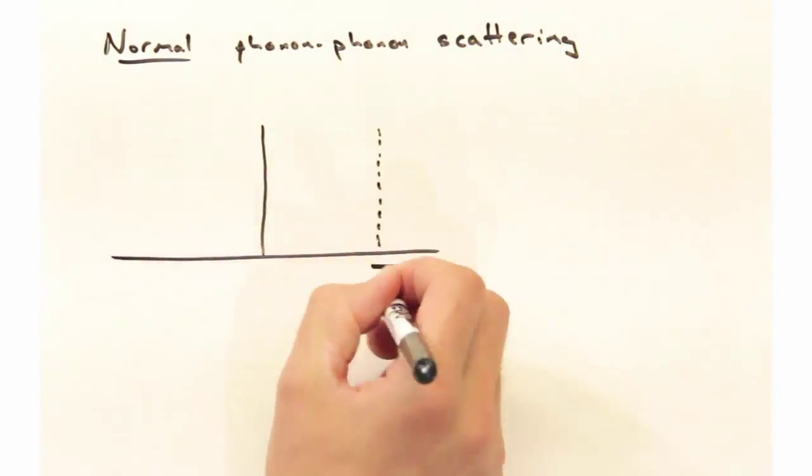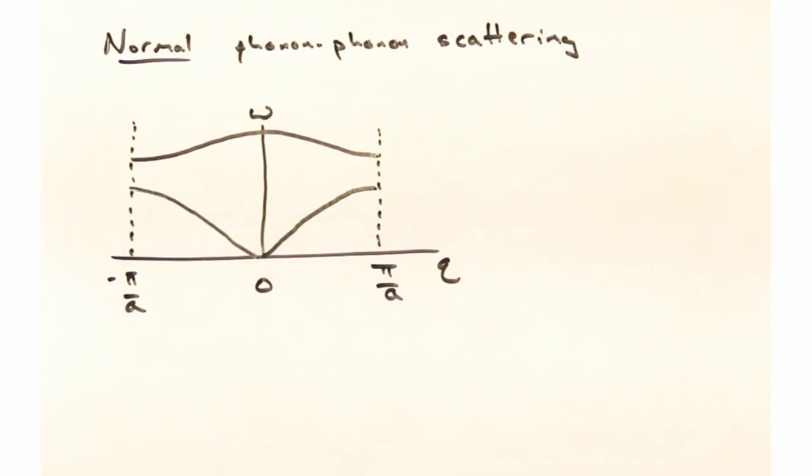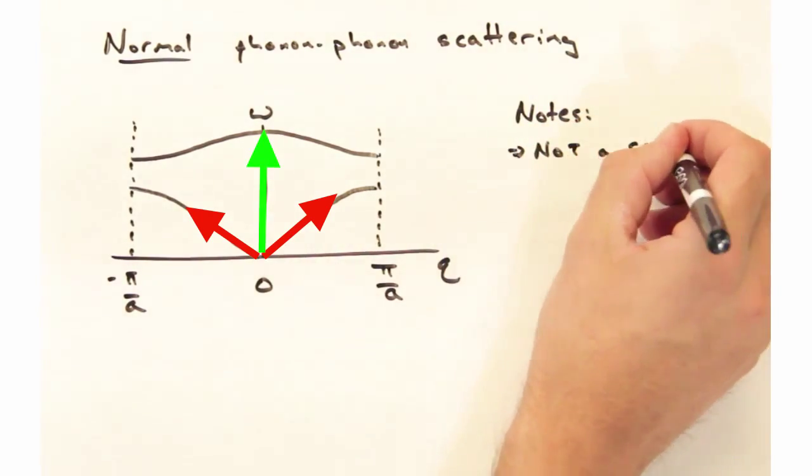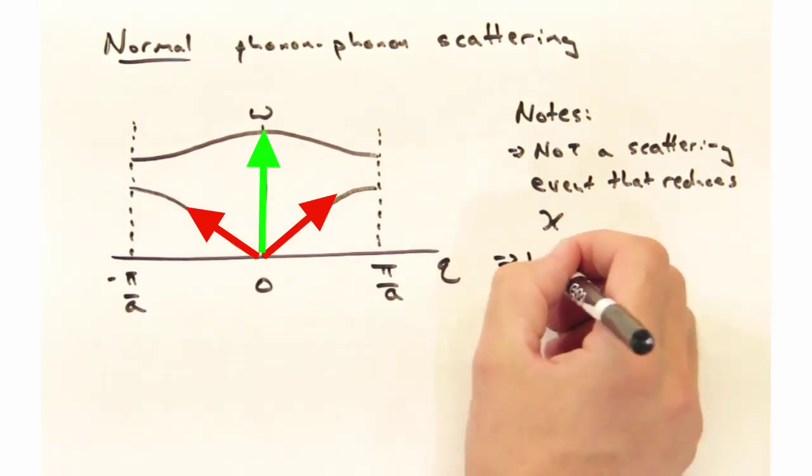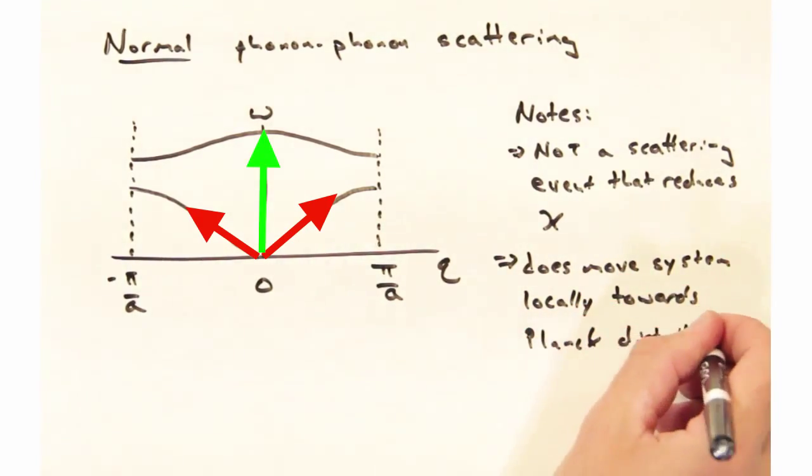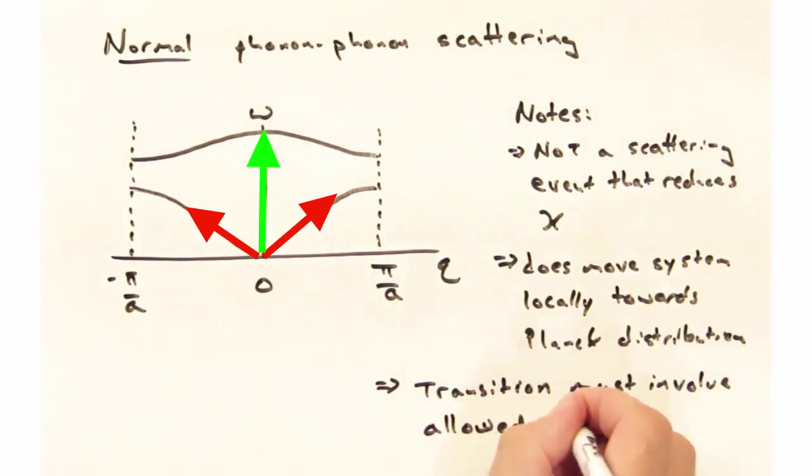With normal phonon-phonon scattering, we might have some one-dimensional dispersion, and two acoustic phonons can combine together to give me this optical phonon. There's some notes, though, that we should consider. First, as it doesn't change your crystal momentum, this is not going to be a scattering event that actually reduces thermal conductivity. While it may not reduce thermal conductivity through scattering, what it does do is locally move the system towards the Planck distribution. And as a final note, this transition must involve allowed states. You can't have two phonons coming in and then trying to create a phonon at some point in the dispersion that is forbidden.